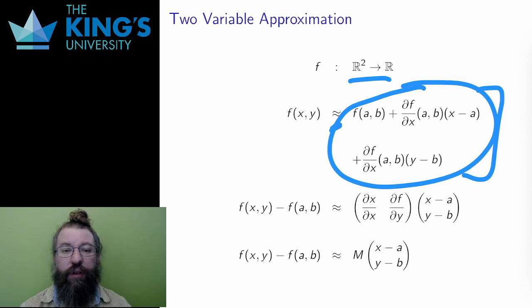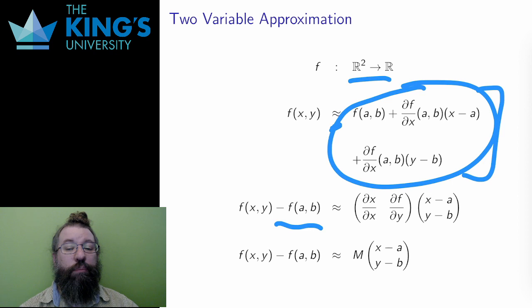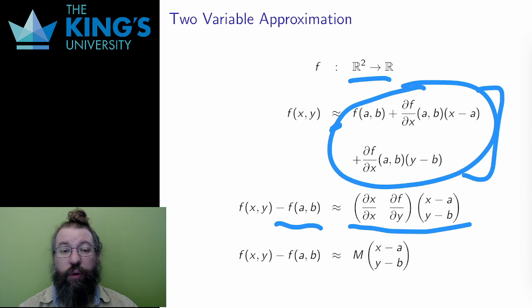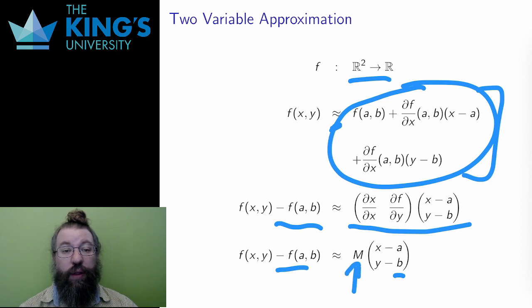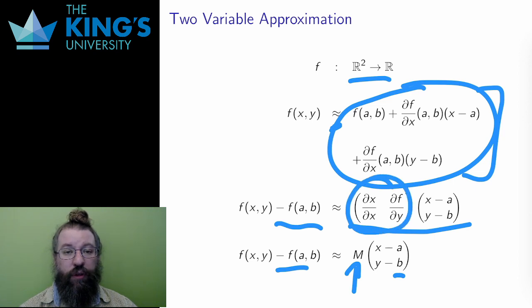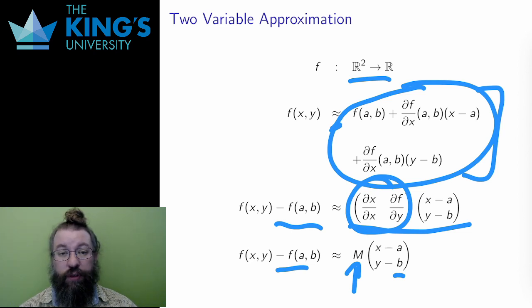I can do a little bit better here even. For those of you who have some linear algebra, if I take f of a, b over to the left, like I did for the single variable case, then I can write this in matrix notation, with the partials in a 1 by 2 horizontal matrix, and the variables, with their shifts, in a vertical 2 by 1 matrix. Then, up to a shift, this linear approximation is a linear transformation defined by a matrix, as it should be. The matrix M in this equation is the matrix with the partial derivatives. So the best linear approximation to the function is given, up to a shift, by the matrix of the partial derivatives.